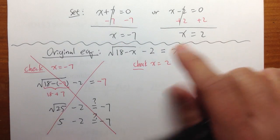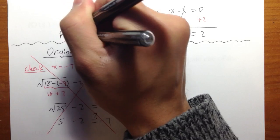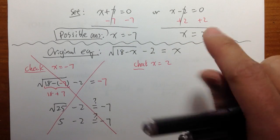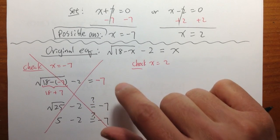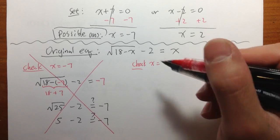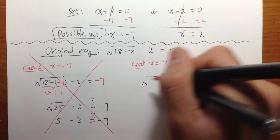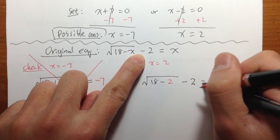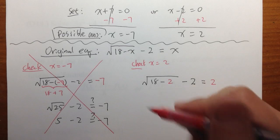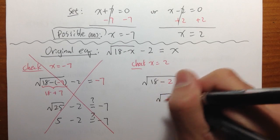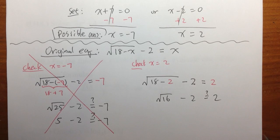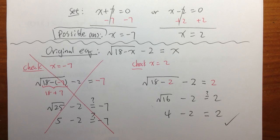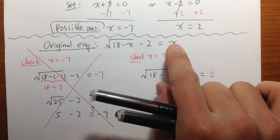Negative 7 and positive 2 were just possible answers. When you plug in negative 7, it turns out that's a fake answer — it doesn't work. Hopefully x equals 2 will work. Plug in x equals 2: square root of 18 minus 2, minus 2. Inside, 18 minus 2 is 16. Square root of 16 minus 2. Square root of 16 is 4, and 4 minus 2 equals 2. So x equals 2 makes this equation work, and this is the only solution.